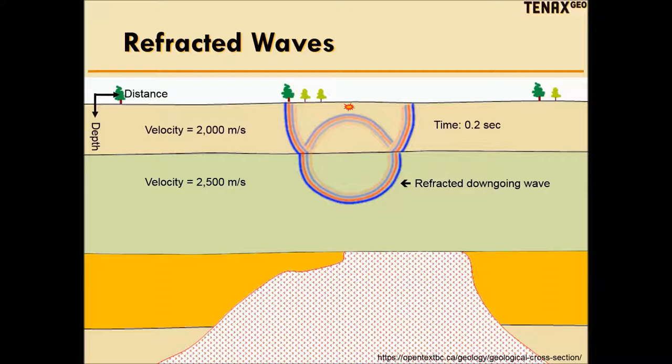The second strange thing you see is the stretching of the down-going wave. It's no longer a sphere. The stretching effect is called refraction. Seismic waves travel at 2,000 meters per second in the top layer and 2,500 meters per second in the green layer.